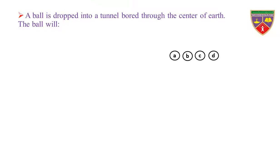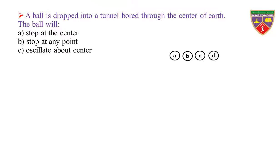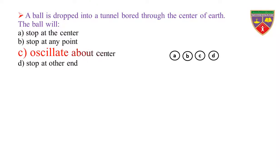A ball is dropped into a tunnel bored through the center of Earth. The ball will: Option A: stop at the center. Option B: stop at any point. Option C: oscillate about the center. Option D: stop at the other end. The key is oscillate about the center. Therefore, the correct option is C.